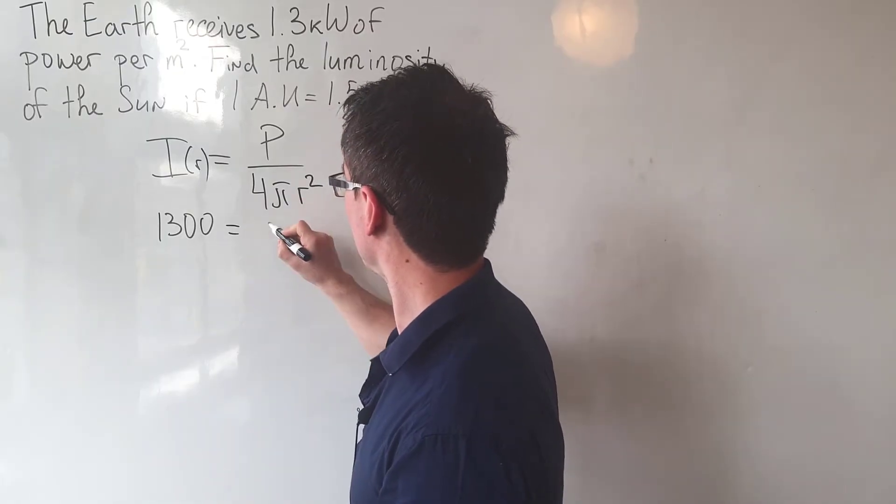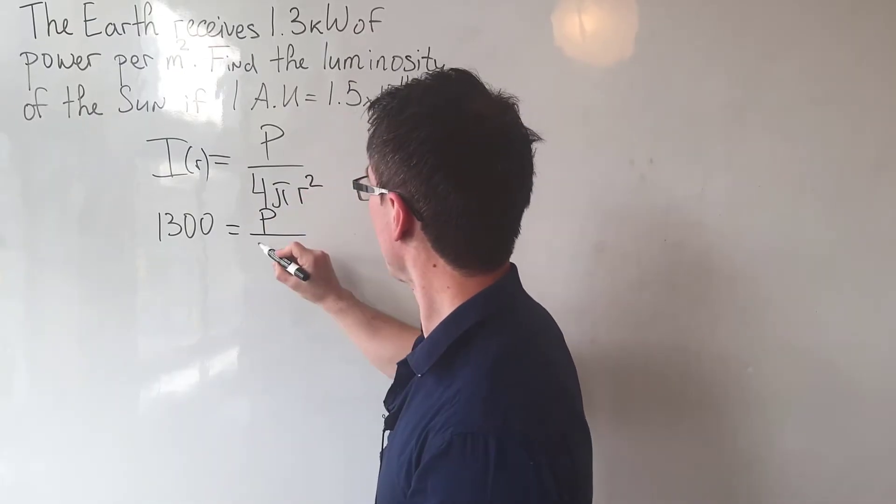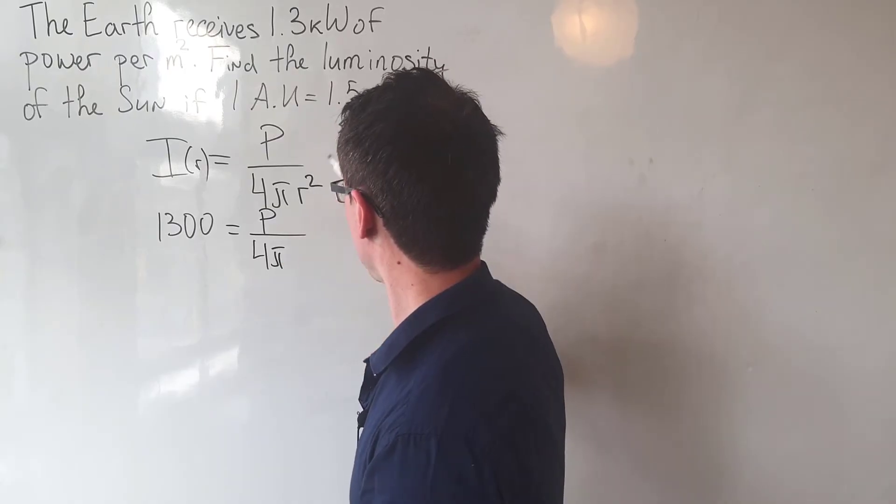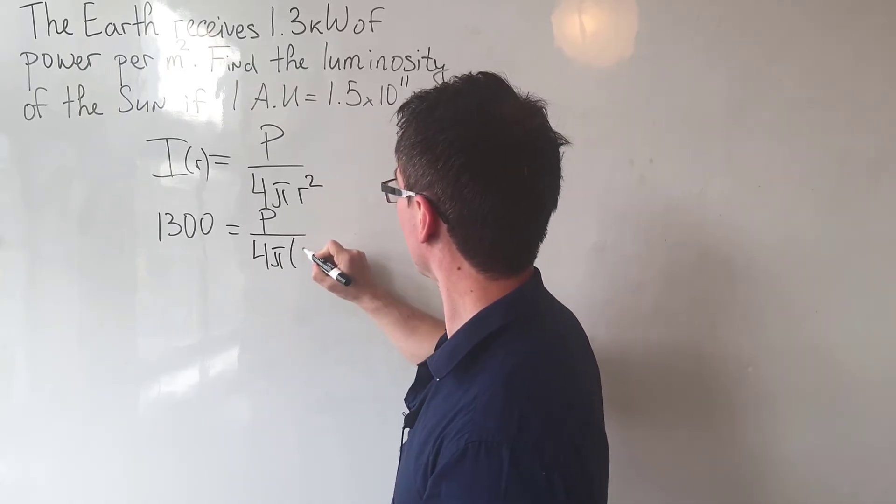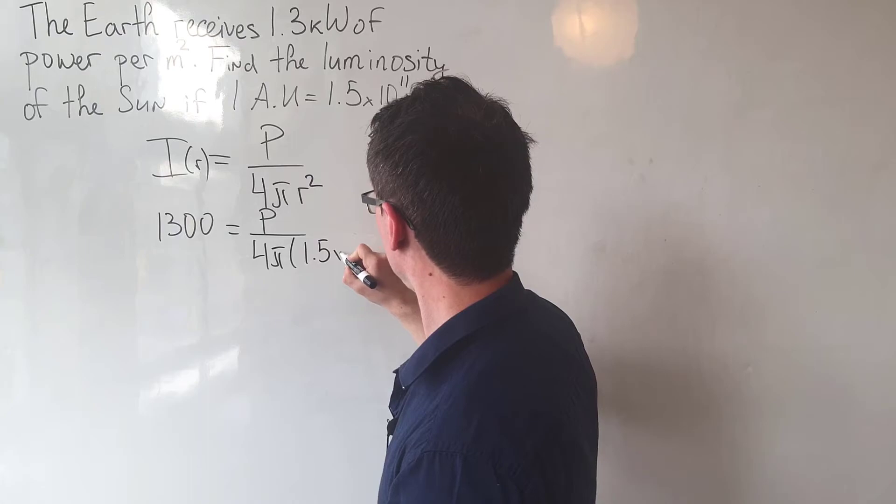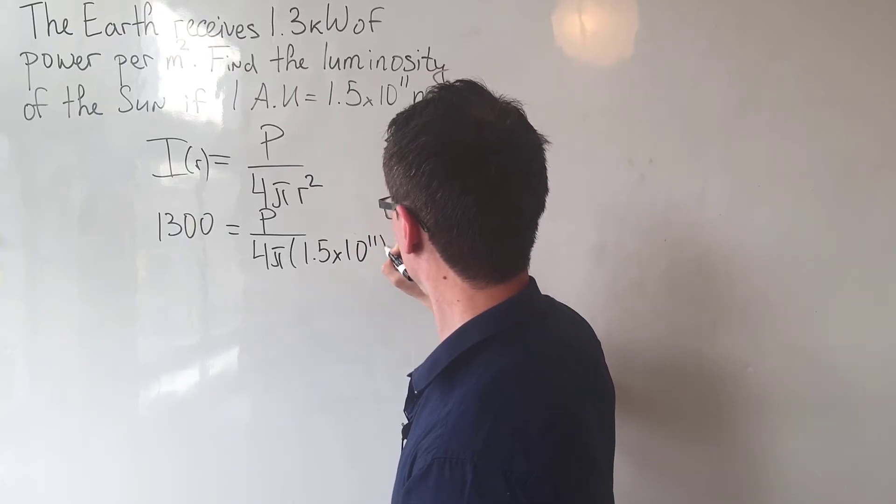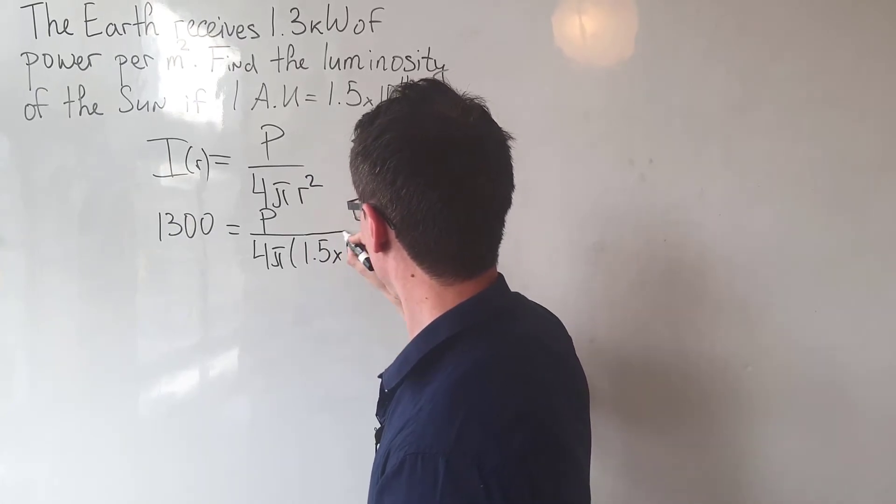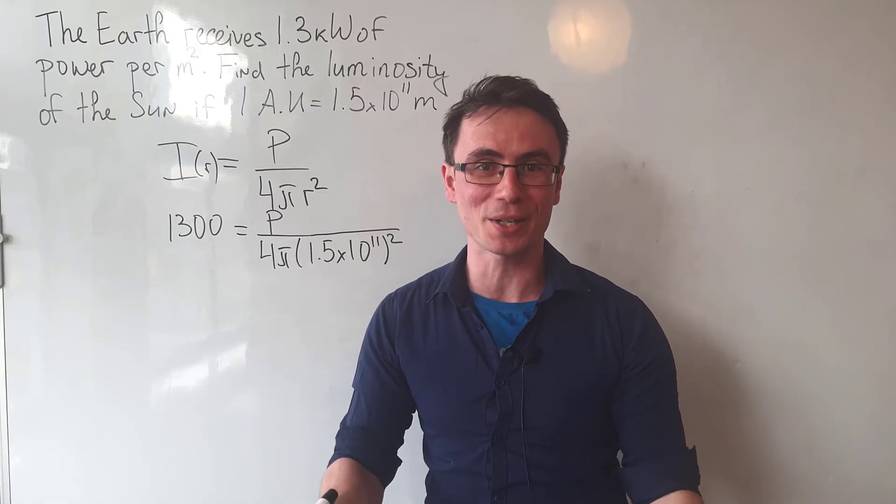And then r², so it's going to be 1.5 times 10 to the power of 11 squared. And now we can simply just rearrange for the power.